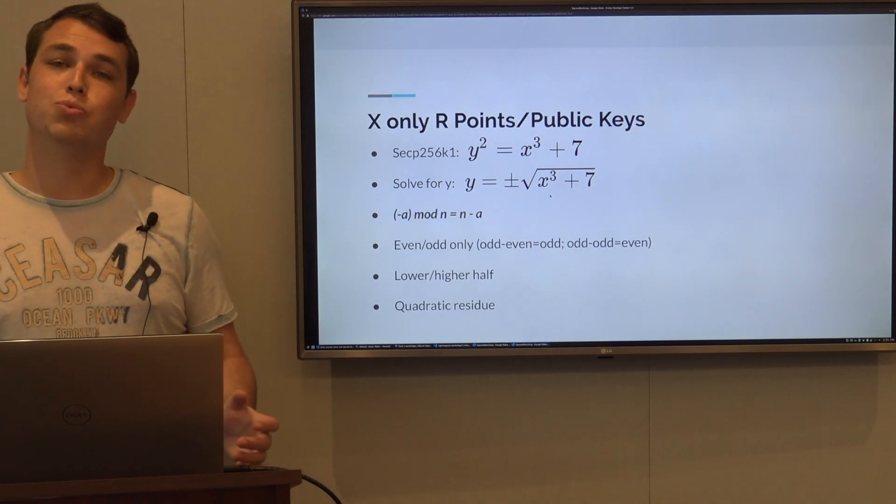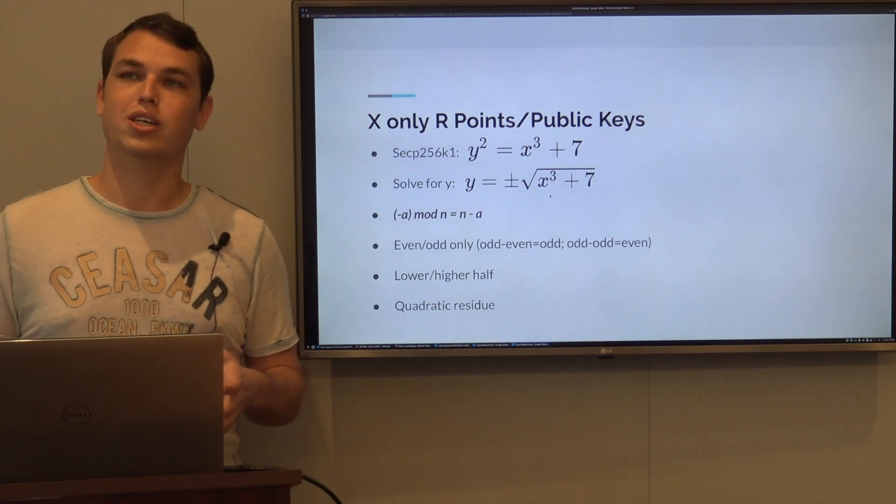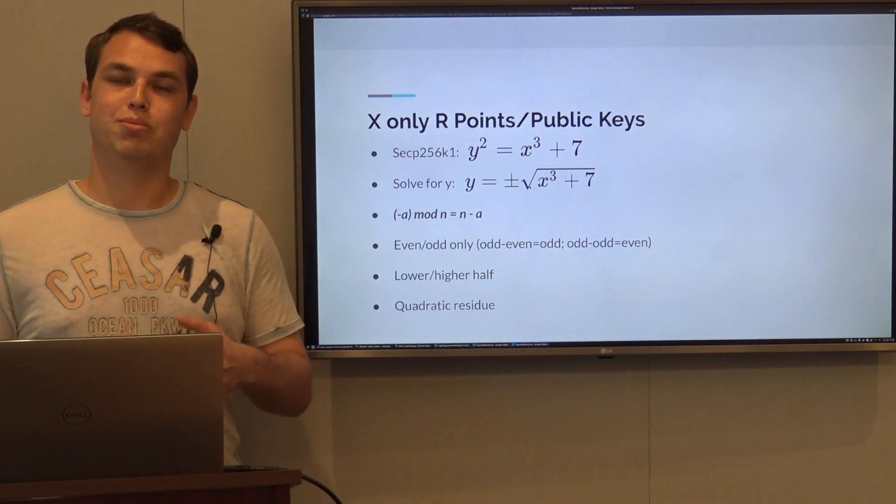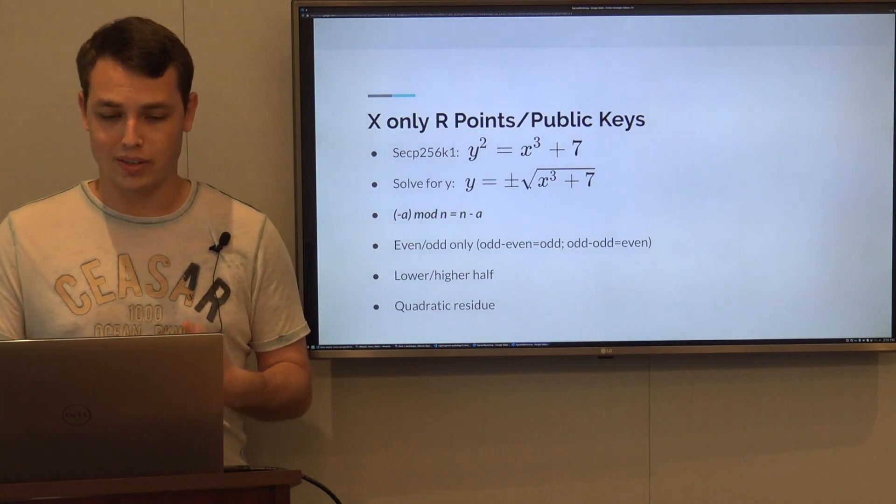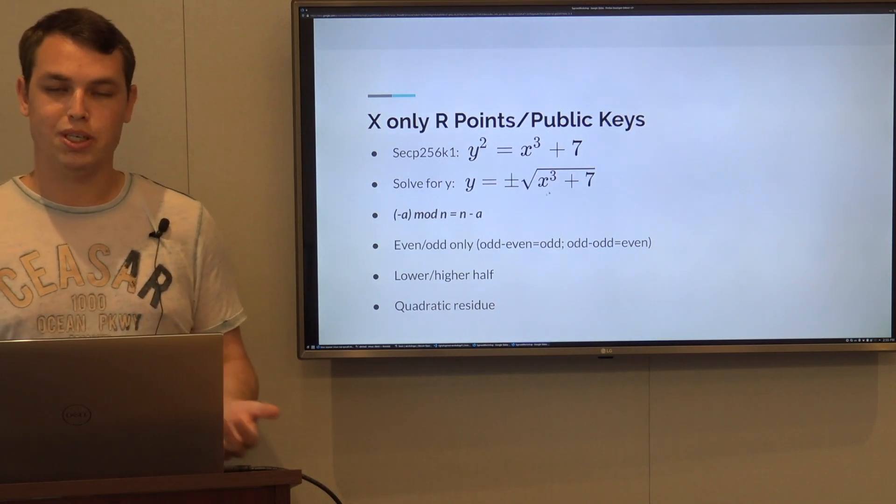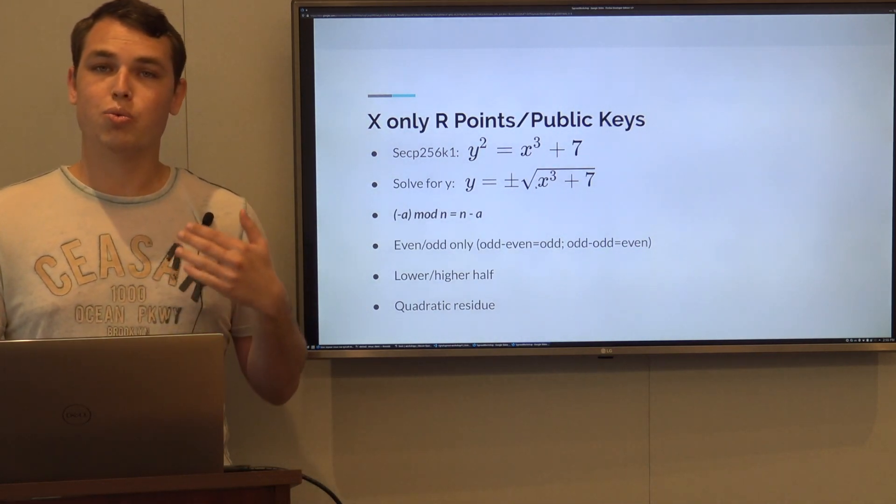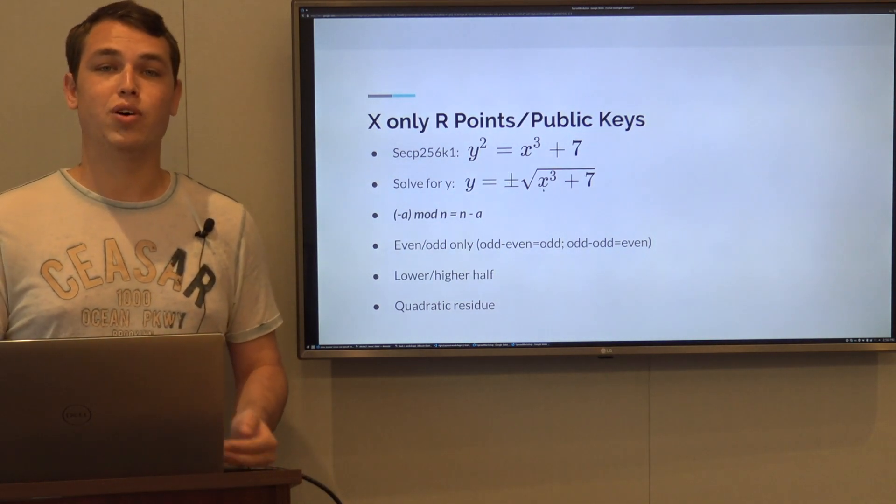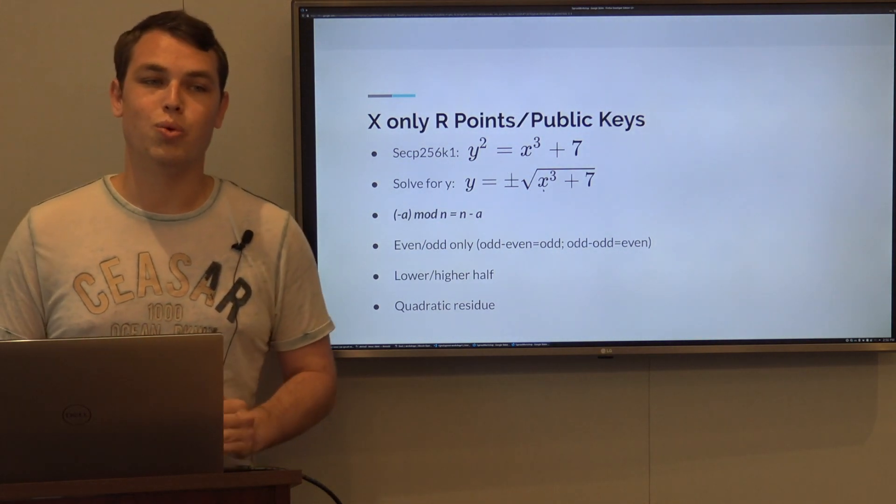What we can do is try to make a way that we send only the x and not the y, because R is a point and it has x and y. If we look at the secp equation, we can solve for y and we get a square root.